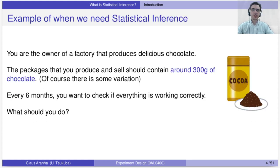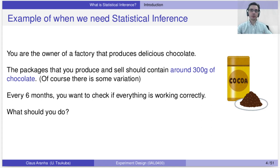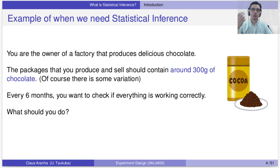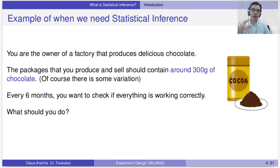Let's start with an example. Let's say that you are the owner of a factory that produces chocolate — you are a very lucky person. In your factory, the packages are supposed to contain 300 grams of chocolate. Of course, the factory is not perfect — it's the real world. So sometimes a package has 301 grams, sometimes 295 grams. But on average, you expect your factory to produce packages with 300 grams. You want to make sure that if something breaks, you know. So every six months you do a test to check if everything is working correctly, if your factory is still producing packages at the expected values.